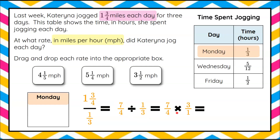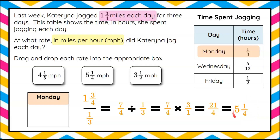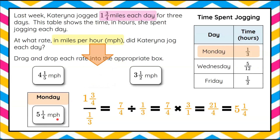So now to multiply: seven times three is twenty-one, and four times one is four, giving us twenty-one-fourths. Four goes into twenty-one five times with one left over, so her miles per hour on Monday was five and one-fourth miles per hour. We identify that as Monday's rate and drag it over to Monday.